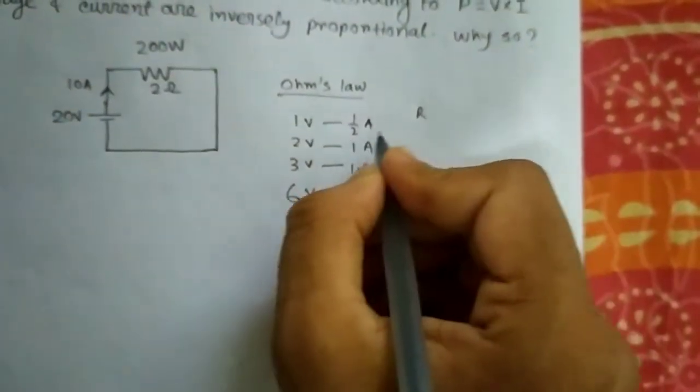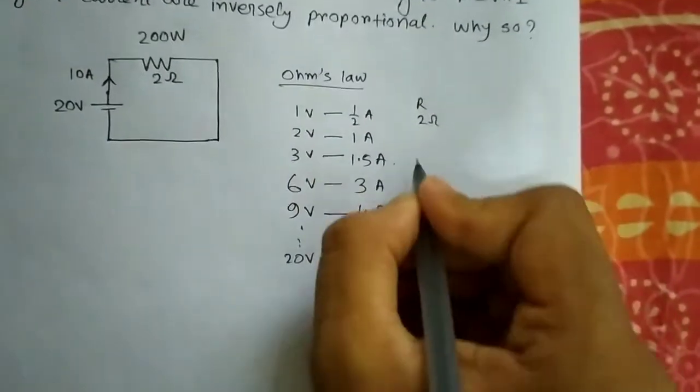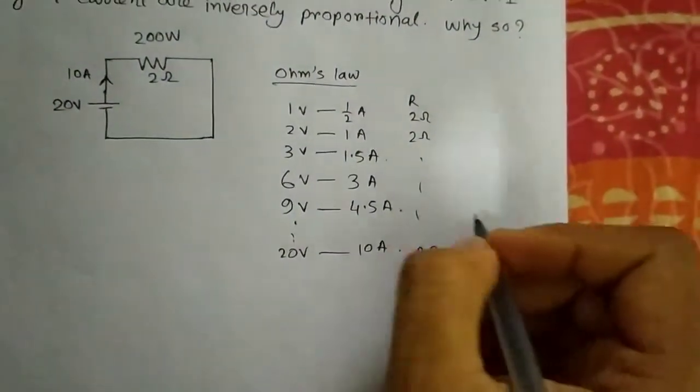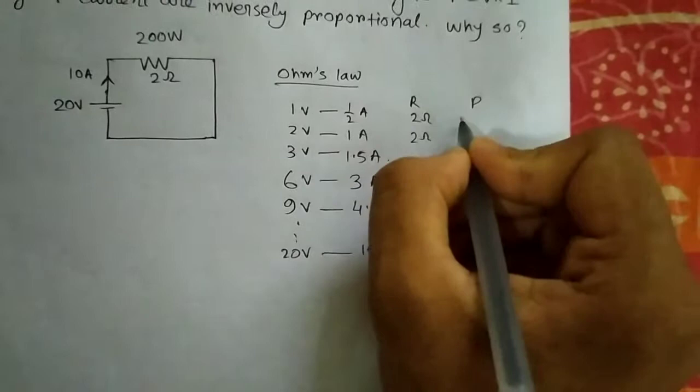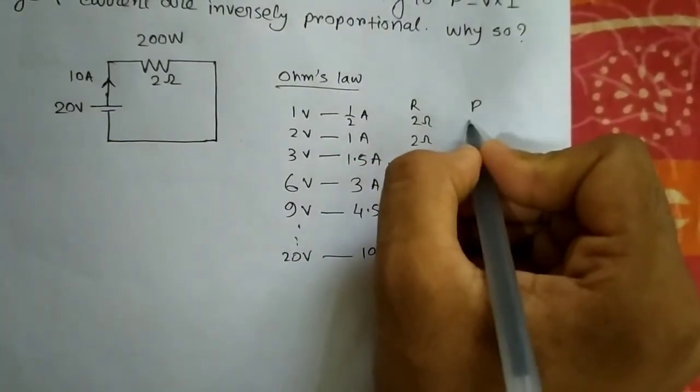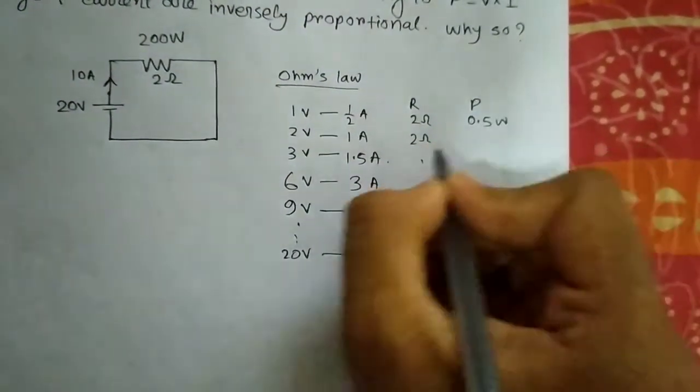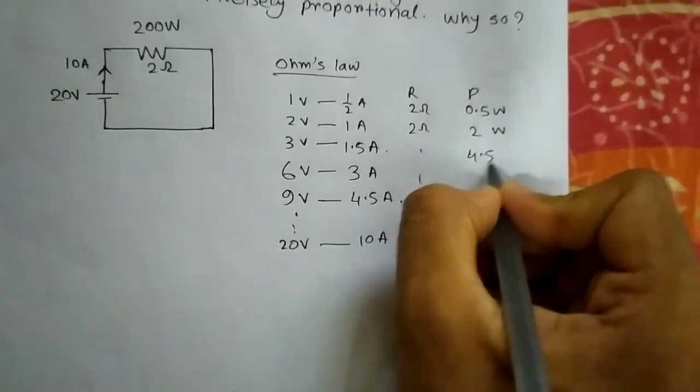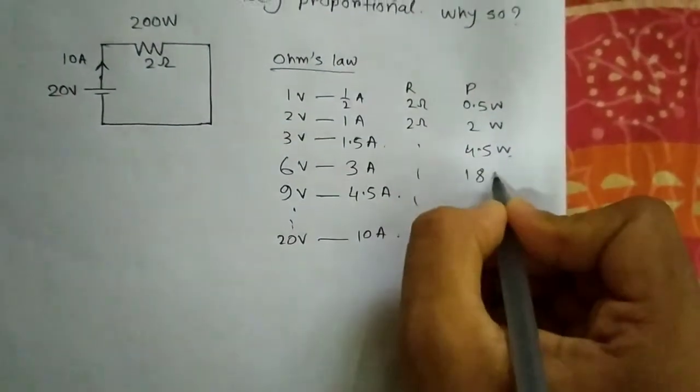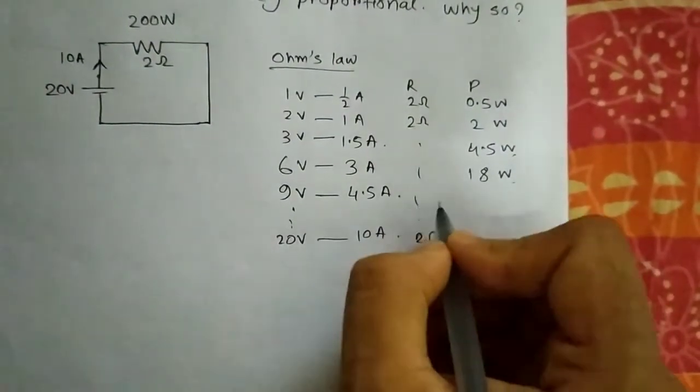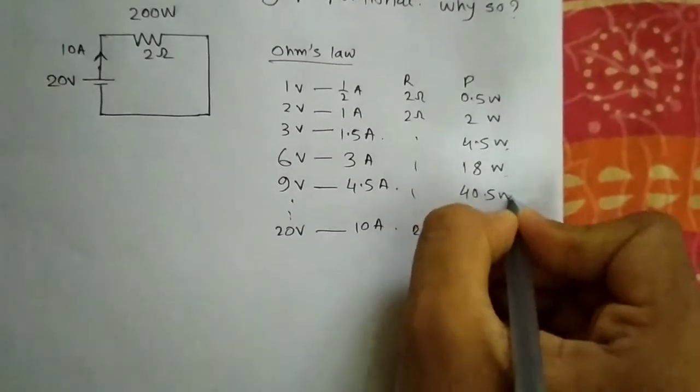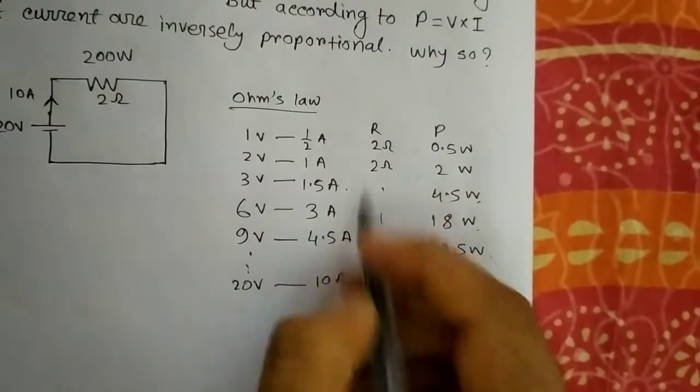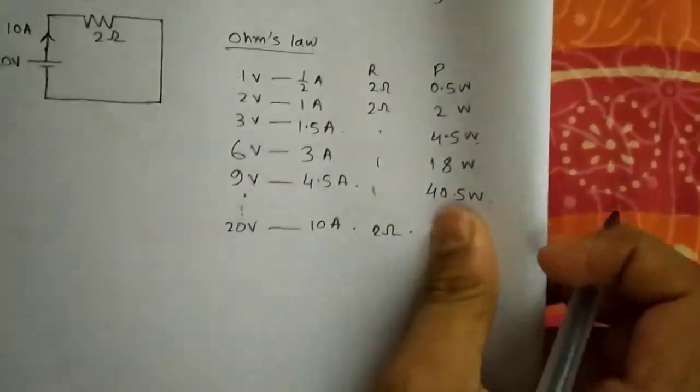It will also come to 2, but the power rating of each case is different. Here the power will become 0.5 watts, here will be 2 watts, and here will be 4.5 watts. In the same way, this will be 18 watts and this will be 40.5 watts. So the power is different but the resistance is the same in every case.